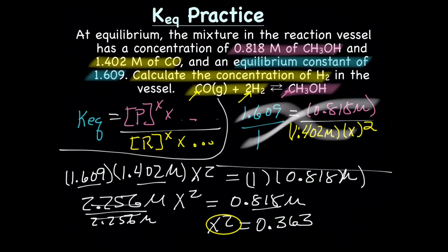We're not quite done yet, because we have X squared. We don't want to know the value of X squared. We want to know the value of X. So to figure out the value of X, we just take the square root of both sides. Square root, square root, and that will give us X equals 0.602 with 3 sig figs. And there you go.